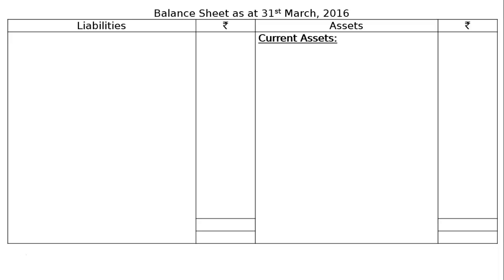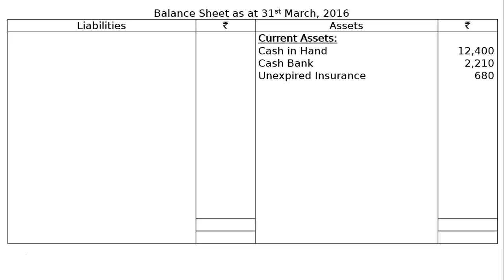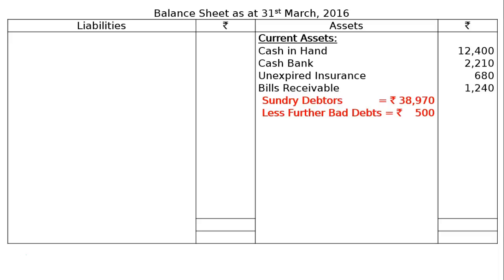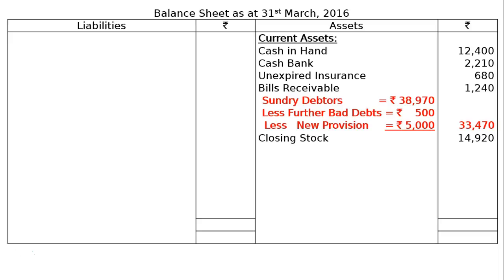On the asset side, current assets: cash in hand rupees 12,400; cash at bank rupees 2,210; unexpired insurance rupees 680; bills receivable rupees 1,280. Sundry debtors rupees 38,970, less further bad debts rupees 500, less new provision for bad debts rupees 5,000. Final column figure for sundry debtors: rupees 33,470. Closing stock rupees 14,920.